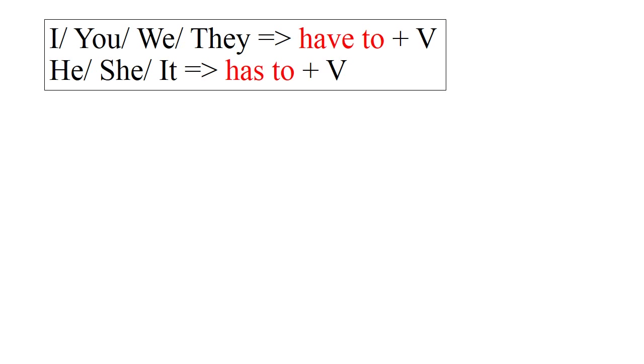Ở phần này Miss Jung's giải thích bằng tiếng Việt cho các bạn dễ hiểu. Khi nào chúng ta sử dụng have to? Chúng ta sử dụng have to khi cần phải làm một việc gì đó. Ở đây các bạn thấy công thức. Với những chủ ngữ I, you, we, they, chúng ta dùng have to. Với những chủ ngữ he, she, it, chúng ta dùng has to. Và sau have to hay has to là một động từ nguyên mẫu.